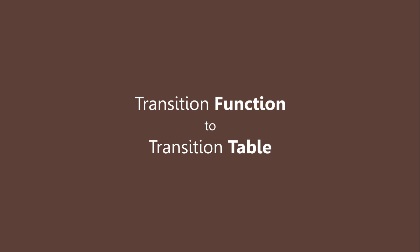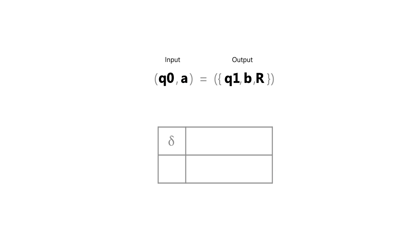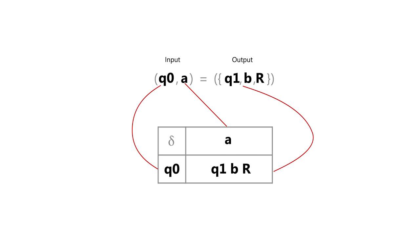Let's start with the transition function and convert it to a transition table. The left-hand side of the transition function equation is the input, and the right-hand side is the output. The table rows are filled with the input state, and the columns with the input string. The intersection is filled with the right-hand side of the transition function.